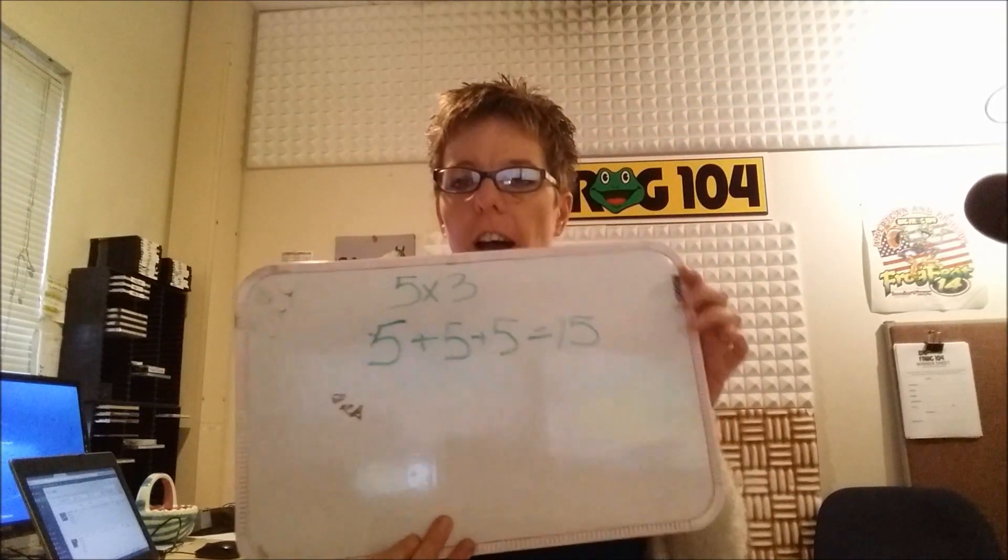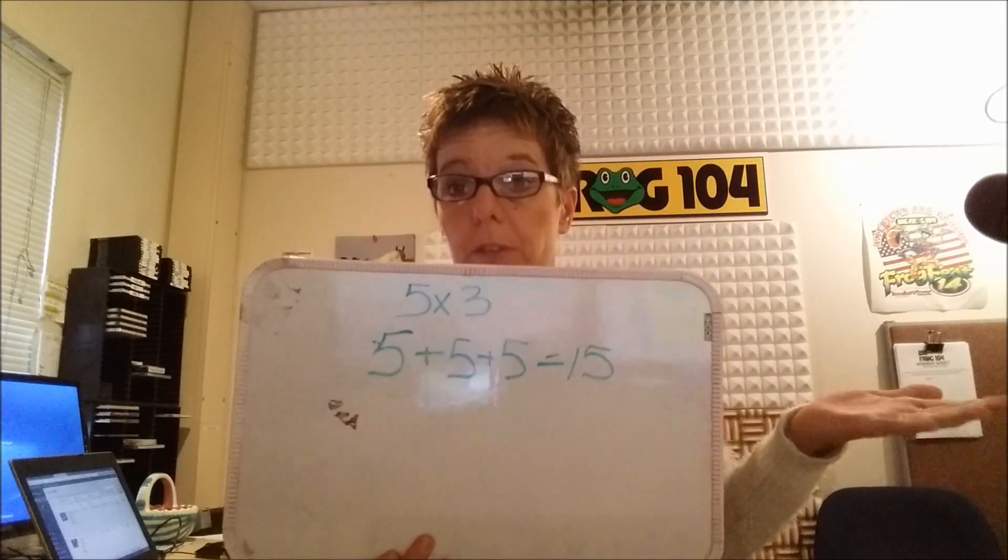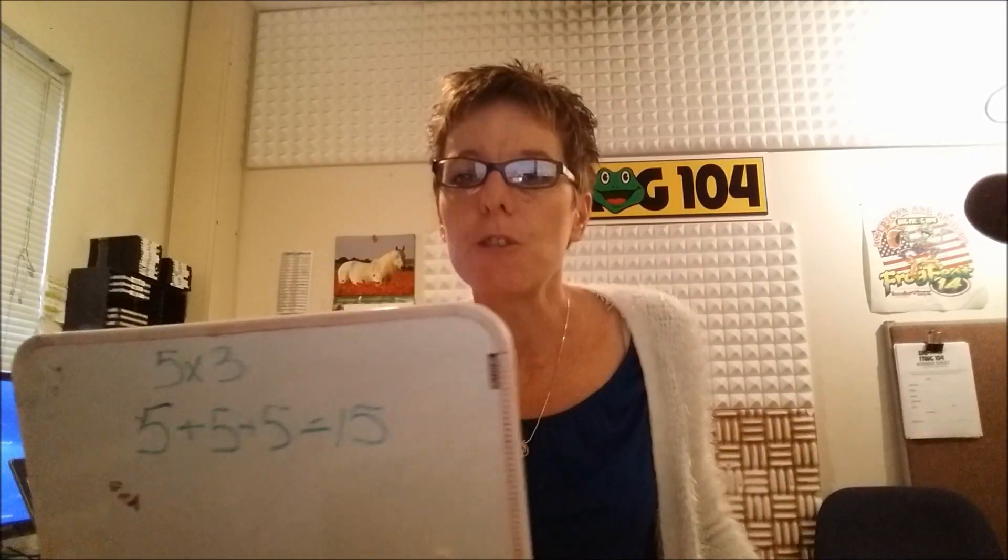But in the new Common Core testing, one student on the test, the way they teach it, wrote 5+5+5=15. Makes sense, right? But the teacher marked it wrong.